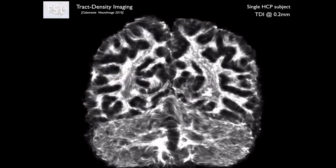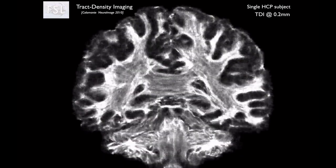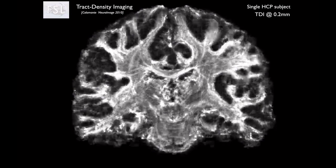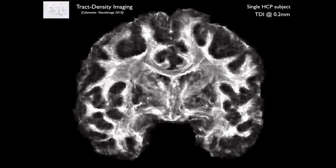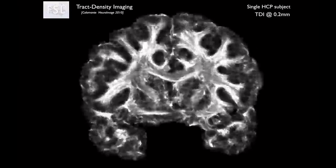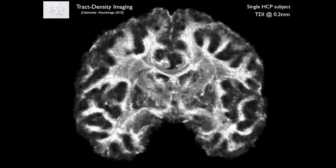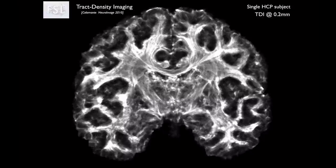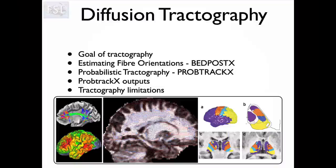Welcome to the first diffusion tractography talk. My name is Michiel Kotar and I will be introducing you to diffusion MRI tractography — how you can produce beautiful images like this by exploiting the information in diffusion MRI to reconstruct the major white matter bundles in the brain and to estimate the connectivity between gray matter brain regions.